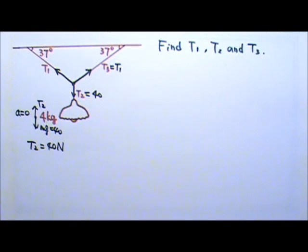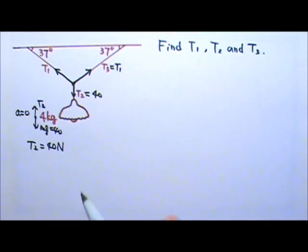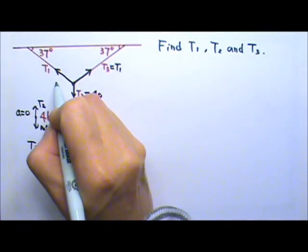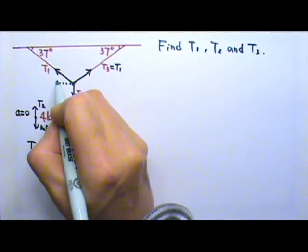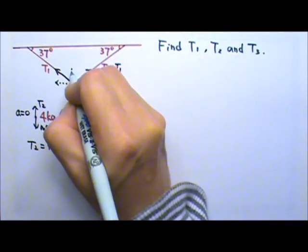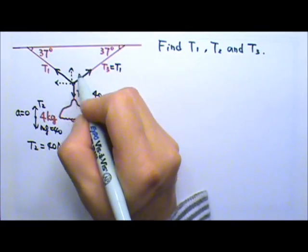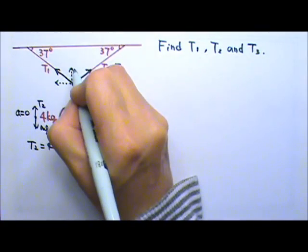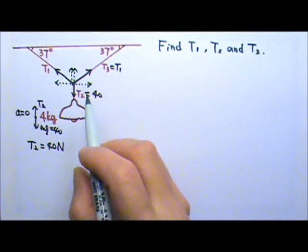This is a two-dimensional problem, so we have to look at one dimension at a time. These slanted forces, we have to find components for them. To find the components, we draw these rectangles. This rectangle here, those are the components for T1. And then the same rectangle on this side because it's symmetric. So I have these two components for T3, which is the same as T1.